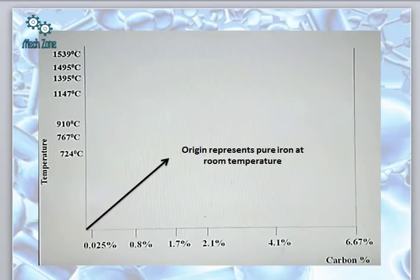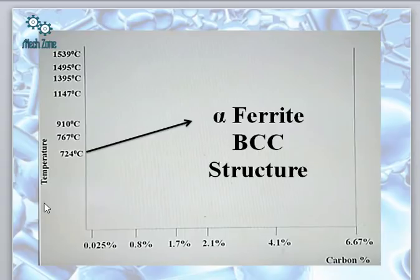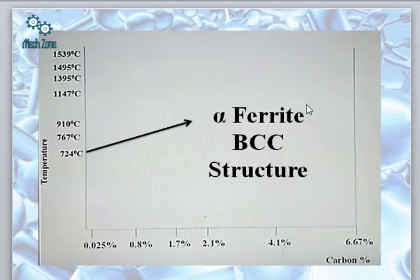Now if from room temperature we are increasing the temperature of the pure iron such that we reach up to 724 degrees, at 724 degrees the phase of iron that is obtained is alpha ferrite. It is known as alpha ferrite and it has a BCC structure.